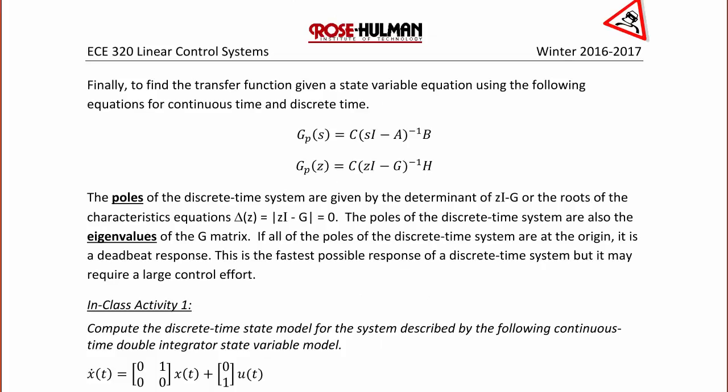Finally, to find the transfer function given a state variable equation, use the following equations for continuous time and discrete time. Gp of s equals C times (sI minus A) inverse times B. Gp of z equals C times (zI minus G) inverse times H. The poles of the discrete time system are given by the determinant of (zI minus G), or the roots of the characteristic equation delta of z equal to the determinant of (zI minus G) set equal to zero.